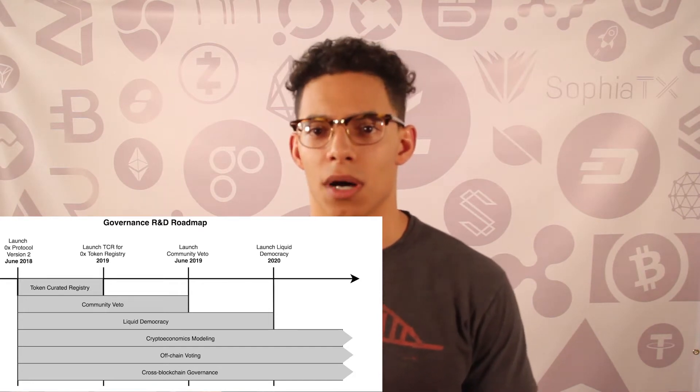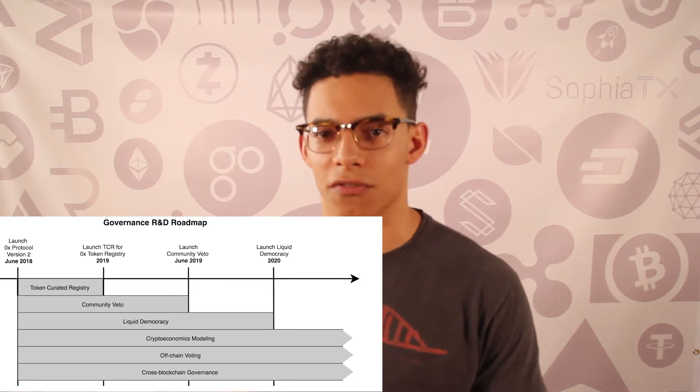In this diagram, 0x illustrates the current plan for their governance roadmap. Within the year, they plan on enabling the token curated registry and community veto, with liquid democracy, crypto-economic modeling, off-chain voting, and cross-blockchain governance coming later. The token registry is a contract which stores ERC-20 token metadata like the symbol, name, and address. That metadata serves as an on-chain reference that market participants use to verify token addresses and exchange rates before entering into a trade. In this first phase, 0x will be transitioning from the current centralized token registry to a community-managed token curated registry, wherein ZRX token holders will be able to add to that list.